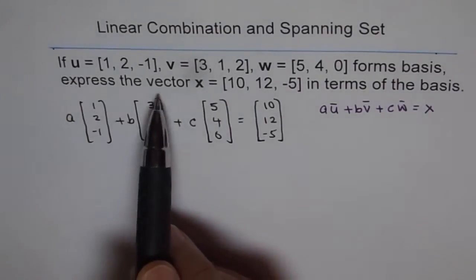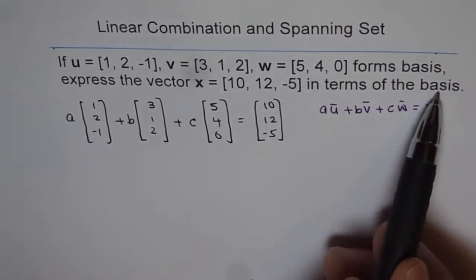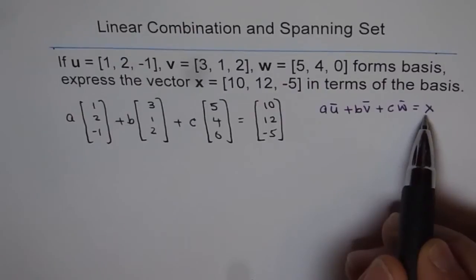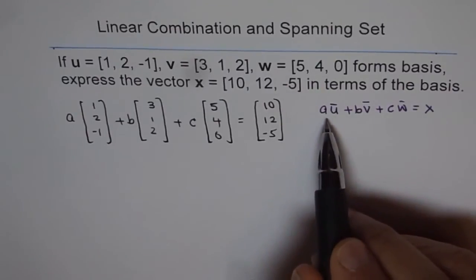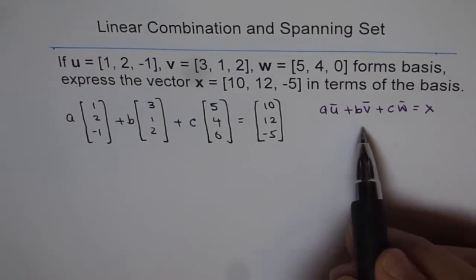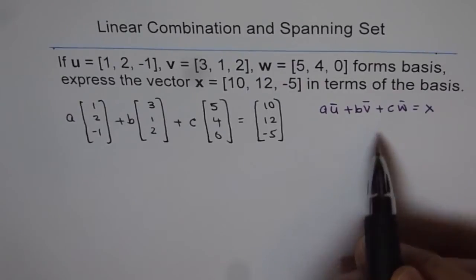So vector x can be represented in terms of the basis if it can be written as a linear combination, correct? And the whole idea now is to find the values for a, b, and c.